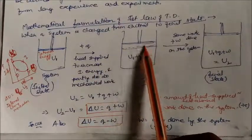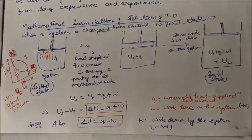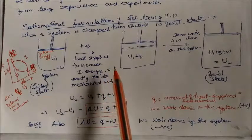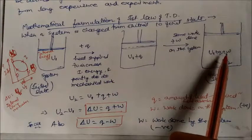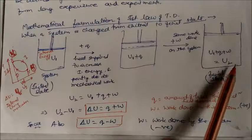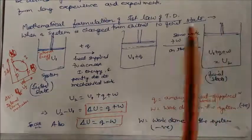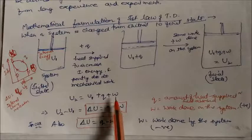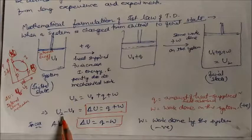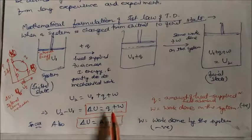We can write: U₁ + q + w = U₂. After the process, the internal energy becomes U₂. Rearranging: U₂ = U₁ + q + w, so q = U₂ − U₁. Therefore, ΔU = q + w. This is the mathematical statement of the First Law of Thermodynamics.